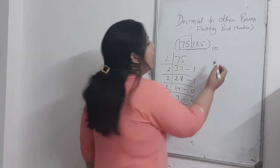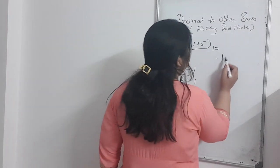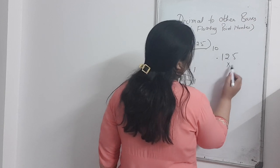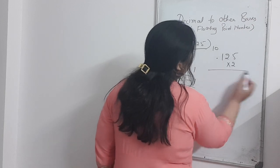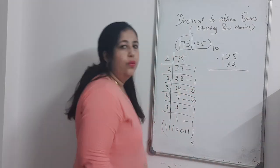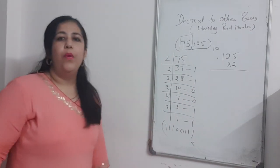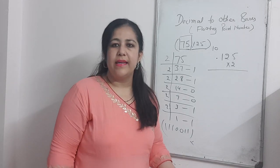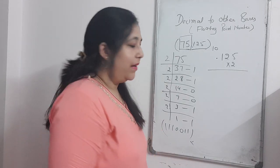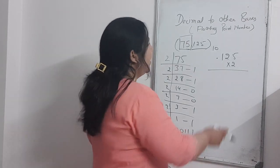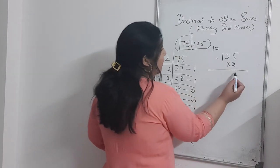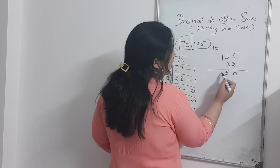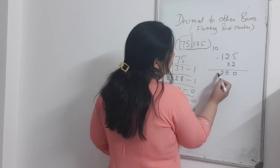For the fractional part, we multiply it by the base. Since the base is 2, I will multiply 0.125 by 2 to extract the binary fractional digits.